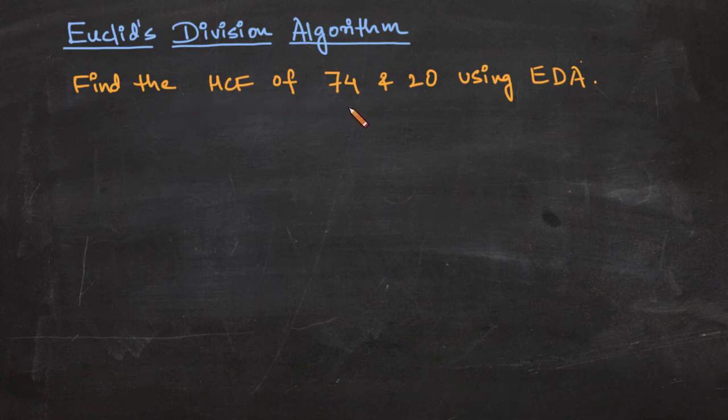Find the HCF of 74 and 20 using Euclid's division algorithm. So this would be our a. Let's take the bigger value as a and the smaller value as b. And we have to start applying Euclid's division lemma until the remainder is zero.